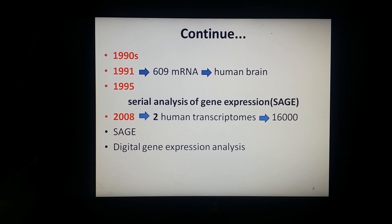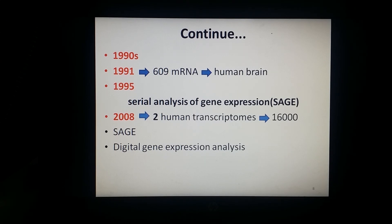In 1995, one of the earlier sequencing-based transcriptomic methods was developed: Serial Analysis of Gene Expression, or SAGE. This method worked by Sanger sequencing of concatenated — meaning linked together in chains or series — random transcript fragments. In 2008, two human transcriptomes composed of millions of transcript-derived sequences covering 16,000 genes were published. By 2015, transcriptomes had been published for hundreds of individuals.